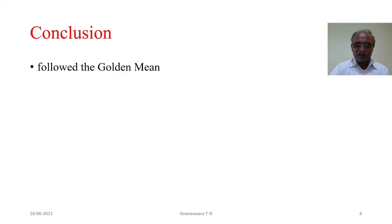As a poet, Tennyson seems to be torn between the opposite forces that were prevailing in the age. He does not take any extreme path; instead, he followed the golden mean, i.e., the middle path. In spite of this, he is one of the greatest poets of the English language.